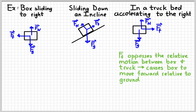So here's a situation where friction is speeding something up. The key word is that friction opposes the relative motion between the two surfaces. Think of all the times you speed something up with friction — when you put something in the back of your car or a truck, you're speeding things up using friction.